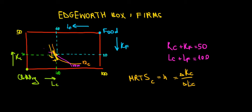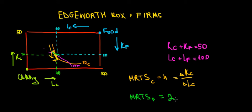With the same logic, let's draw the slope for the purple ISO quant from the perspective of the food company. If we draw that slope at the yellow point, it's much flatter — more horizontal. So it's going to be a smaller MRTS. For the sake of this example, let's say that the MRTS of the food company at that specific point equals 2.